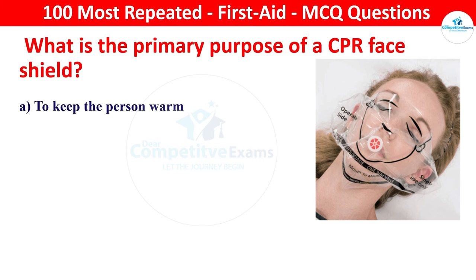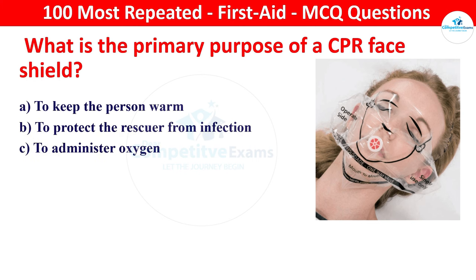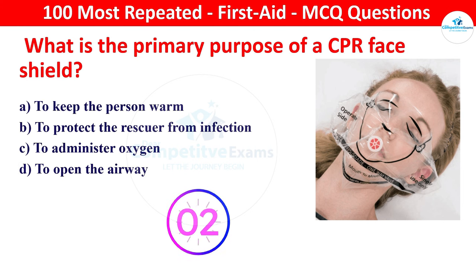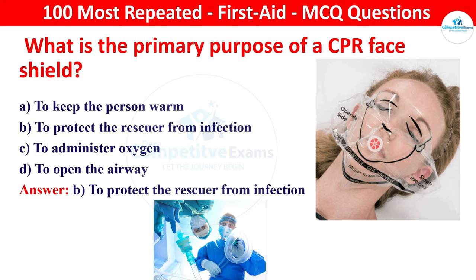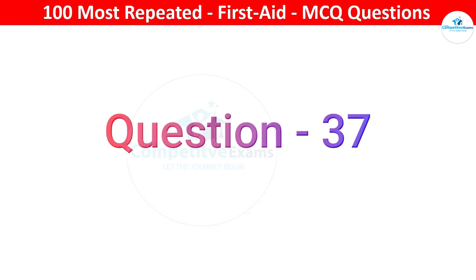Next question: what is the primary purpose of a CPR face shield? Options: to keep the person warm, to protect the rescuer from infection, to administer oxygen, or to open the airway. The right answer is to protect the rescuer from infection. A CPR face shield provides a barrier, reducing the risk of infection transmission from the person receiving CPR to the rescuer.